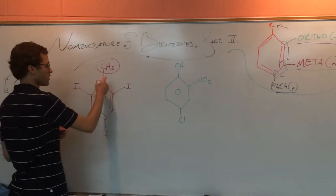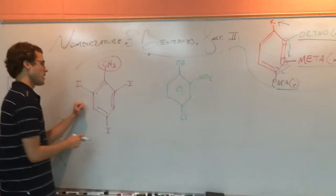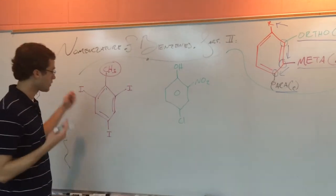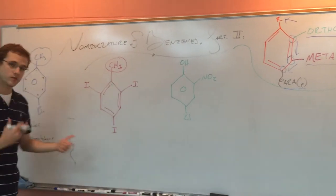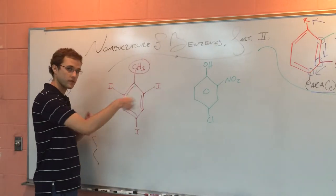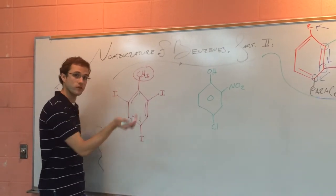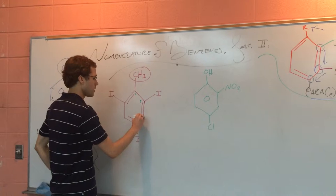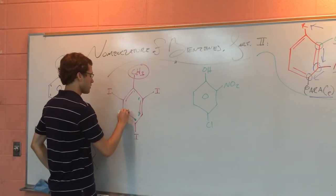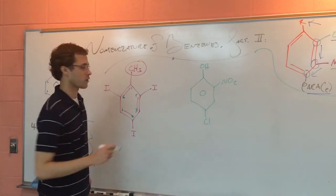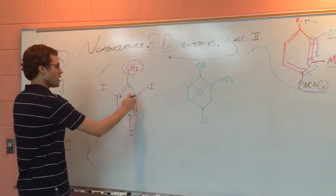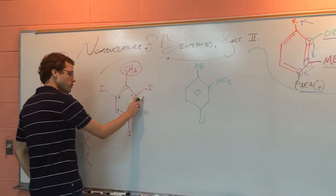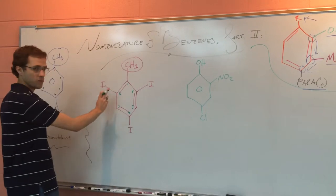How do we number it? We know that this carbon is going to be one, and then either one of these can be two — just like the previous compound, it doesn't really matter because it's going to be the same either way around. So we'll do this counterclockwise as well: carbon two, carbon three, carbon four, carbon five, and carbon six. So we have an iodine group on carbon two, one on carbon four, and one on carbon six.